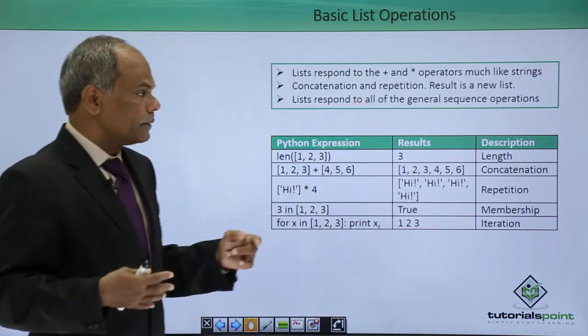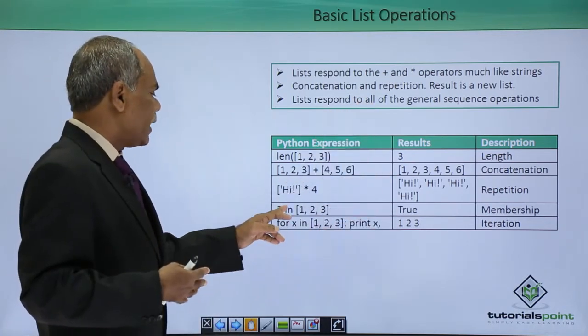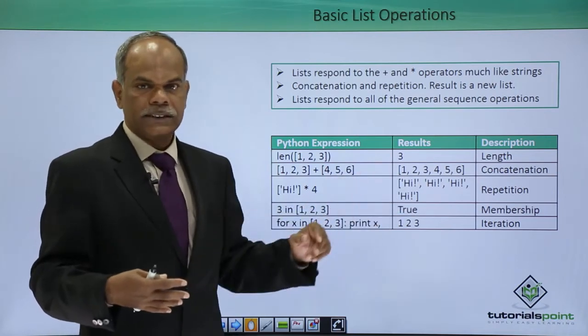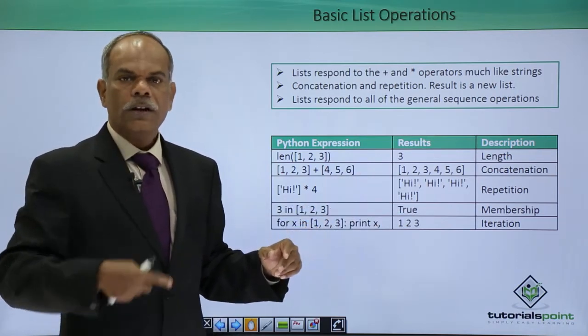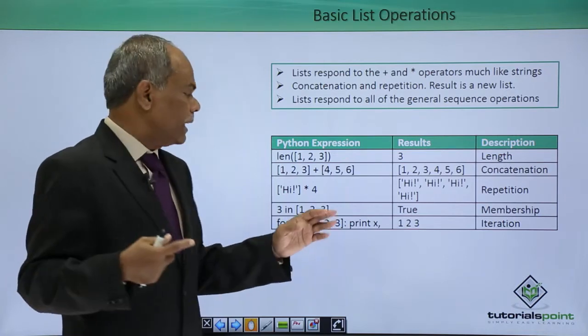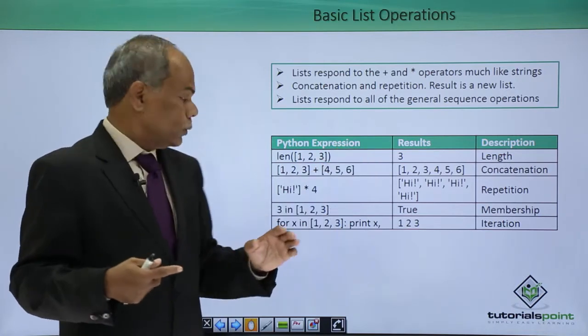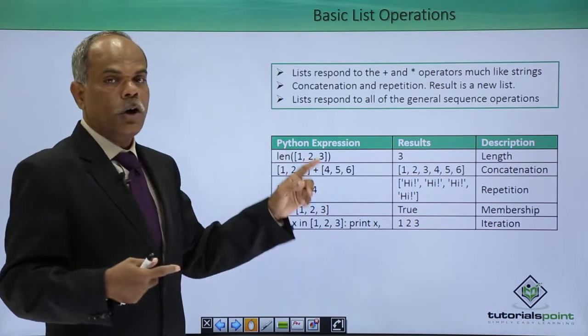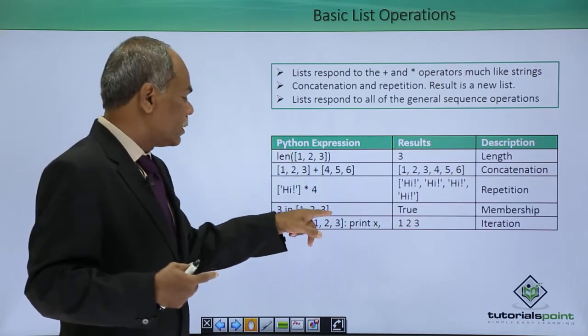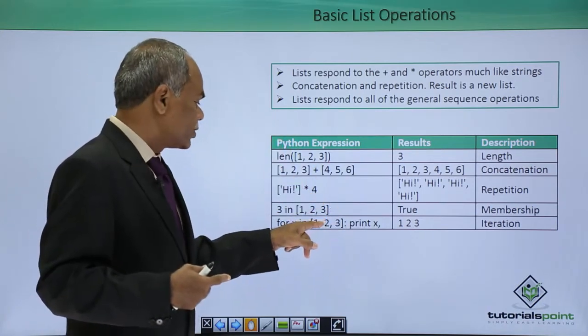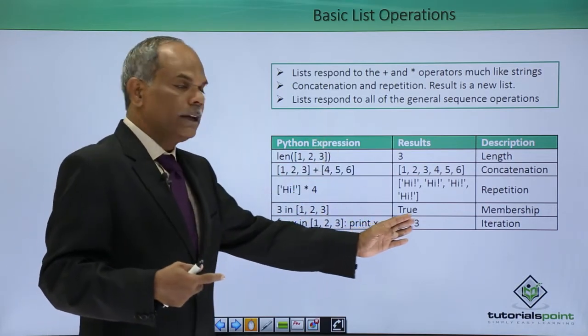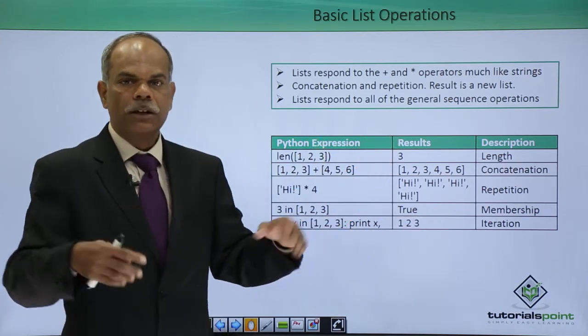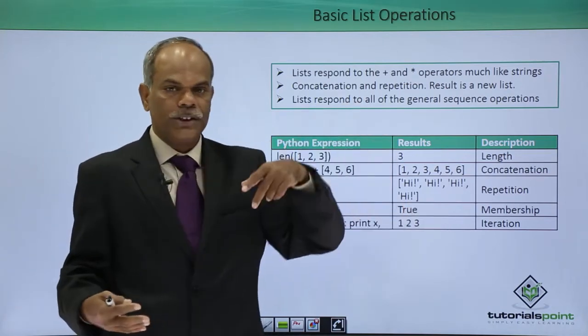Lastly, in this section for x in [1, 2, 3] print x, it will iterate over each element inside the list and print the list. For each value of x, for each value of the object in the list, it will execute a print statement. It will print the contents of the list one by one. It is called as an iteration operation.